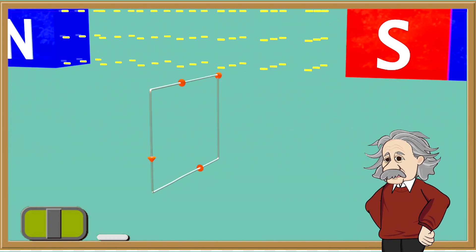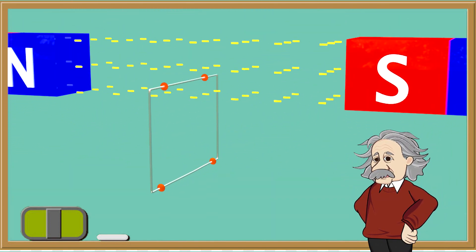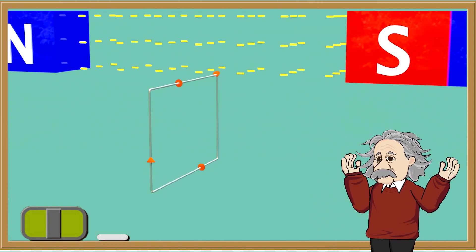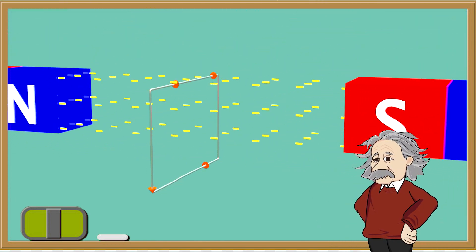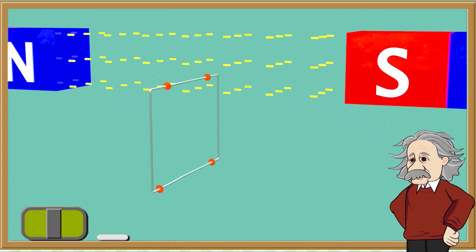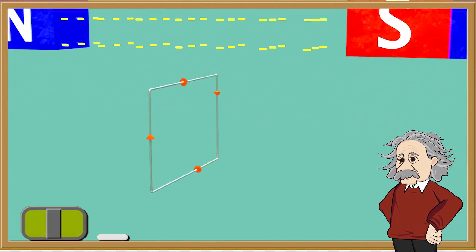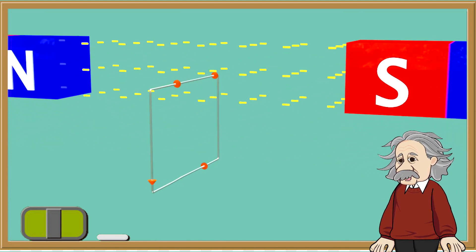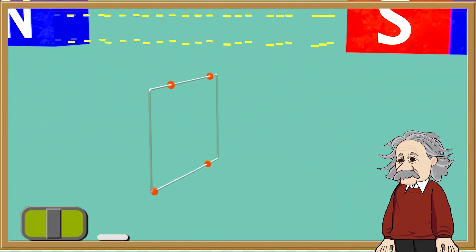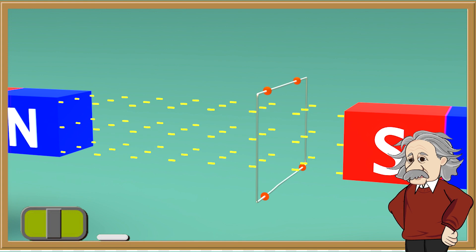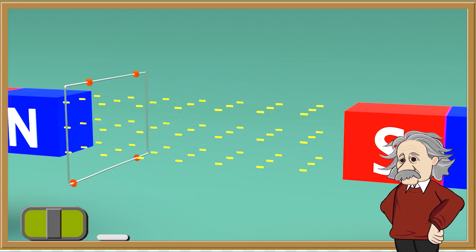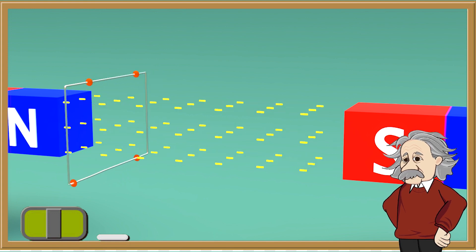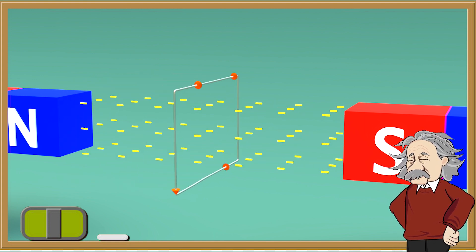We can also get induced potential and an induced current if our circuit is stationary but we move our magnetic field. One thing that we must remember is that the generator effect will occur only if the wire or circuit passes through the magnetic field. If the wire or circuit moves along the magnetic field, then we do not get an induced potential difference or current.